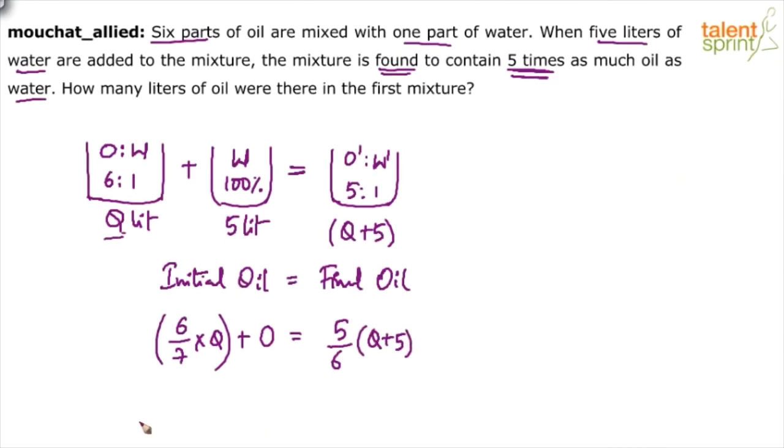You getting it? Six Q by seven plus zero equals to five by six times Q plus five. Total quantity is Q plus five. So let's not do fractions, let us cross multiply.